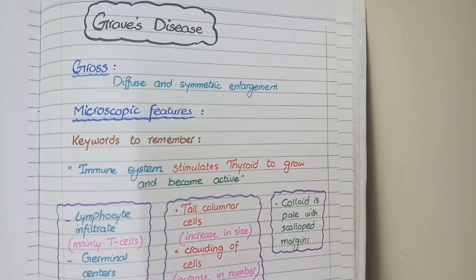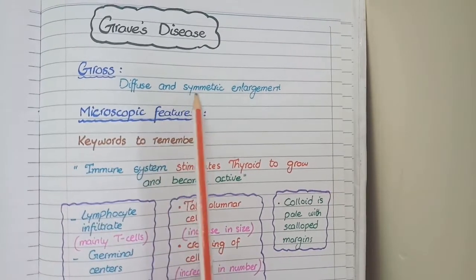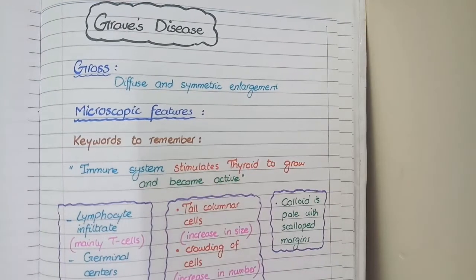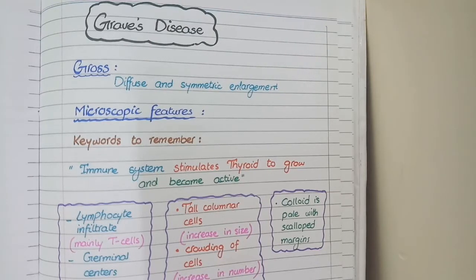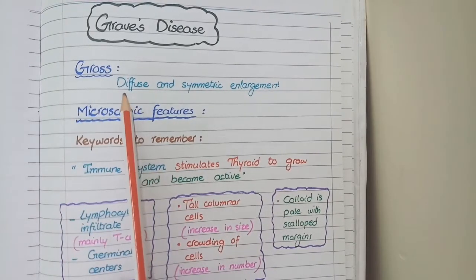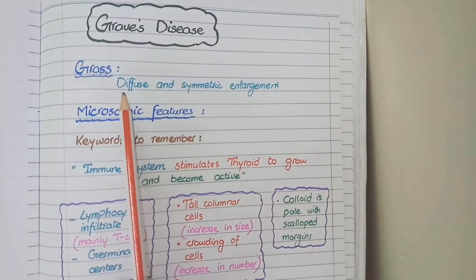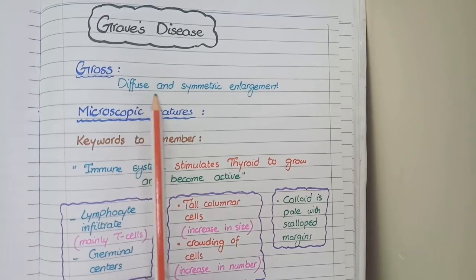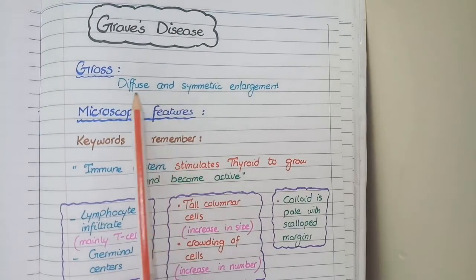On gross specimen, the thyroid gland in Graves' disease is diffusely and symmetrically enlarged. This differentiates Graves' disease from thyroid neoplasms. In thyroid neoplasms, the enlargement is in the form of nodules, but in Graves' disease the enlargement is not nodular — rather it is diffuse and symmetric, affecting the whole thyroid gland.